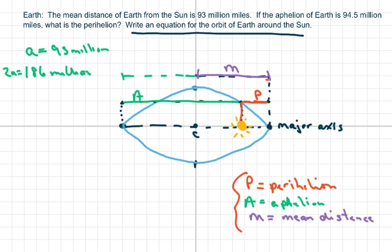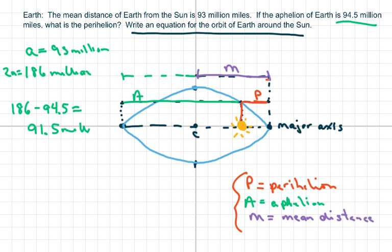The perihelion is 186 million minus 94.5 million, which gives you 91.5 million miles. So again, a is 93 million, the whole length is 186 million, and the perihelion comes out to 91.5 million.